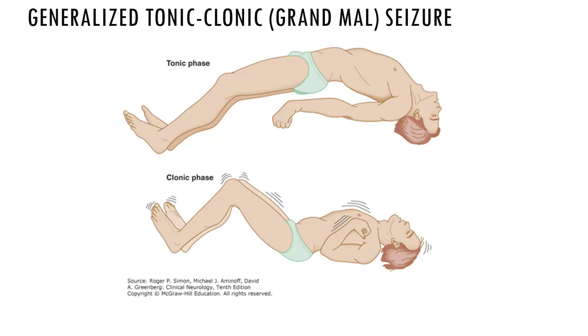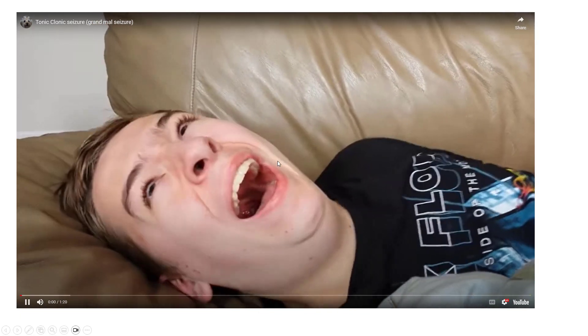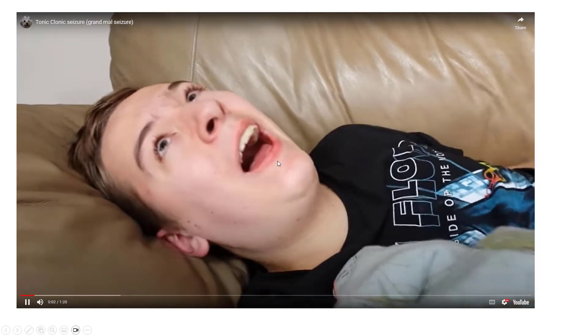Here is an illustration of the tonic phase, which shows why falling backwards is not unusual, and the clonic phase with alternating contraction and relaxation of large muscle groups. Here is a video of a child in the clonic phase of a tonic-clonic seizure. If you can hear the barking, that is not the child — that is a dog in the room.